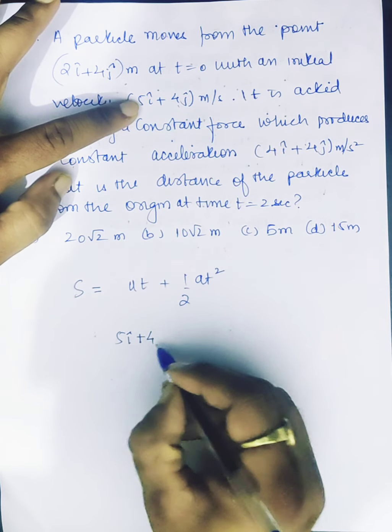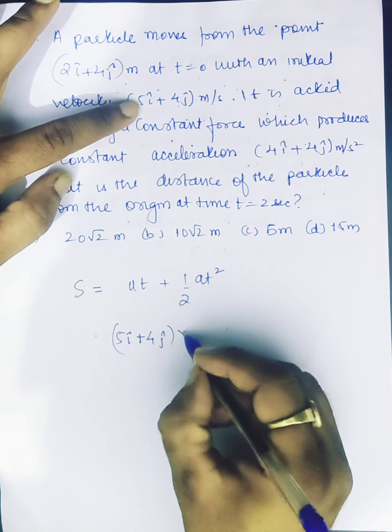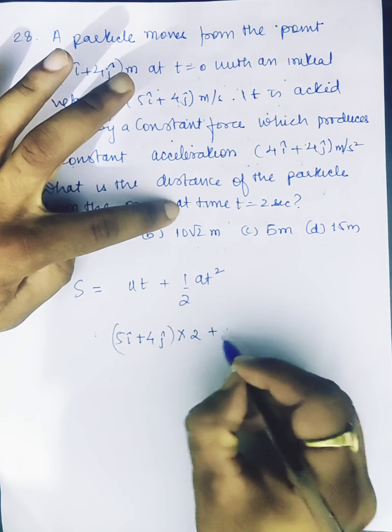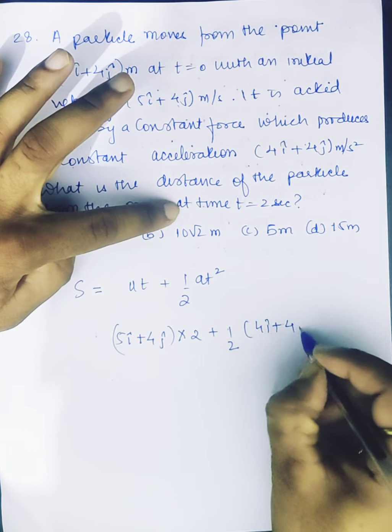5i plus 4j. How much time is given? 2 seconds. How much acceleration is given? 4i plus 4j.